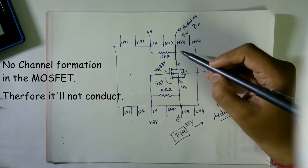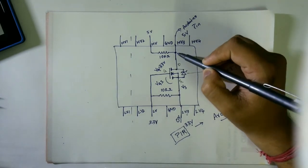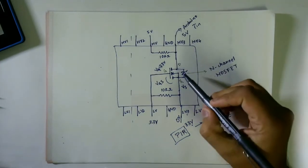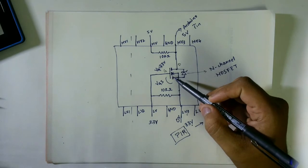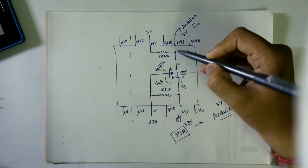So at the drain, the HV3 is pulled up to 5 volts by this 10 kilo ohm resistor. When the MOSFET is not conducting, the output will be 5 volts only because it is pulled up to 5 volts.